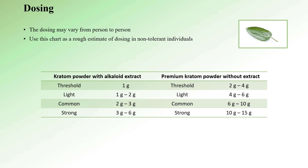Now let's explore Kratom dosing in non-tolerant individuals. Please note that the dosing information is based on user reports from Psychonaut Wiki and Erowid, and is orientational. The optimal dose can vary significantly due to factors such as the specific strain of Kratom, individual tolerance, personal neurochemistry, and metabolism. Focusing on premium Kratom powder: the threshold dose is between 2 to 4 grams, a light dose corresponds to 4 to 6 grams, a common dose lies between 6 to 10 grams, and a strong dose equates to 10 to 15 grams.